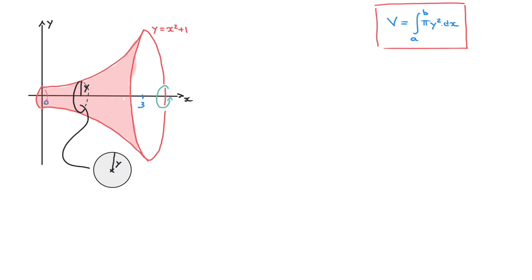The radius of this disk is equal to y. Like all disks, its area is equal to πr². Since r equals y, the area of this disk — and therefore of the cross-section — is given by πy². I'll box that intermediate result. Now that we've established that the cross-sectional area is πy², let's add some thickness to it — turning this into a cylinder.